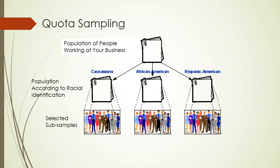Your selected subsamples, then, would be sure to include one-third Caucasian, one-third African American, and one-third Hispanic American individuals. Hopefully, through this quota sampling, you can achieve sample representativeness, at least with respect to racial identification.